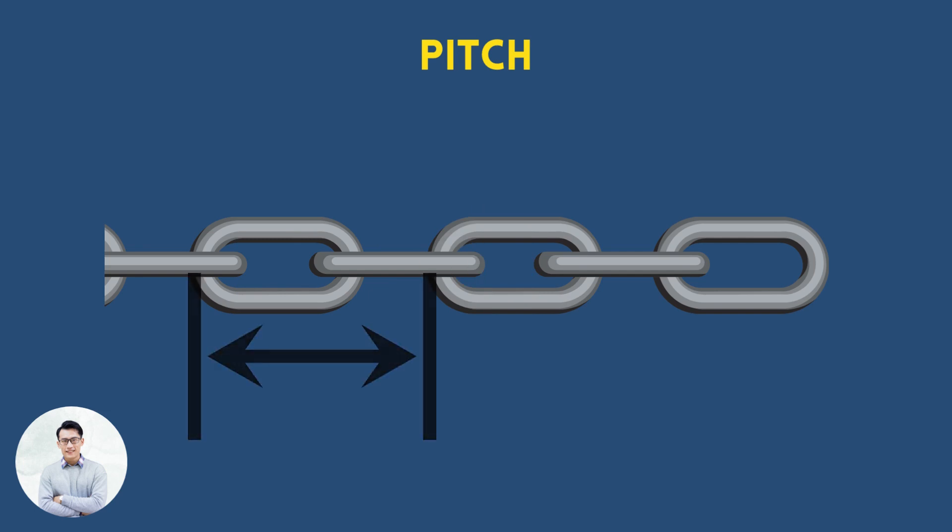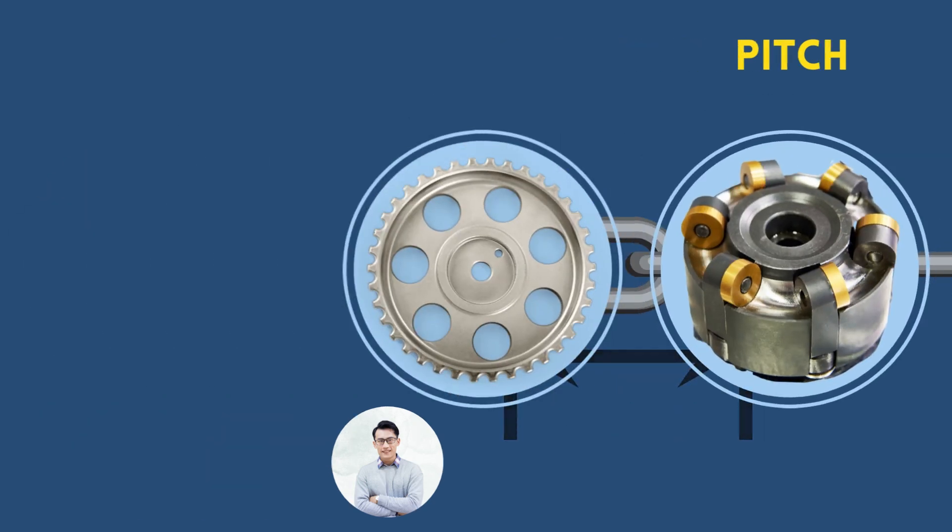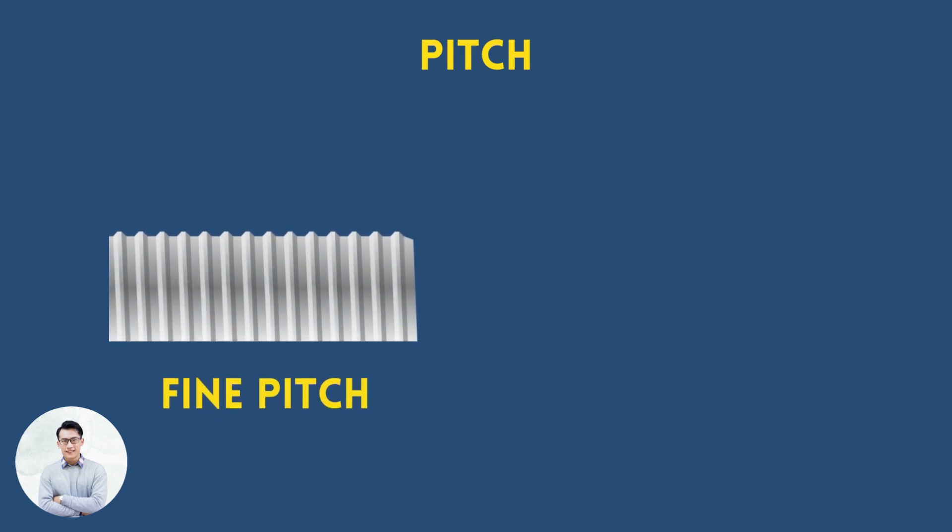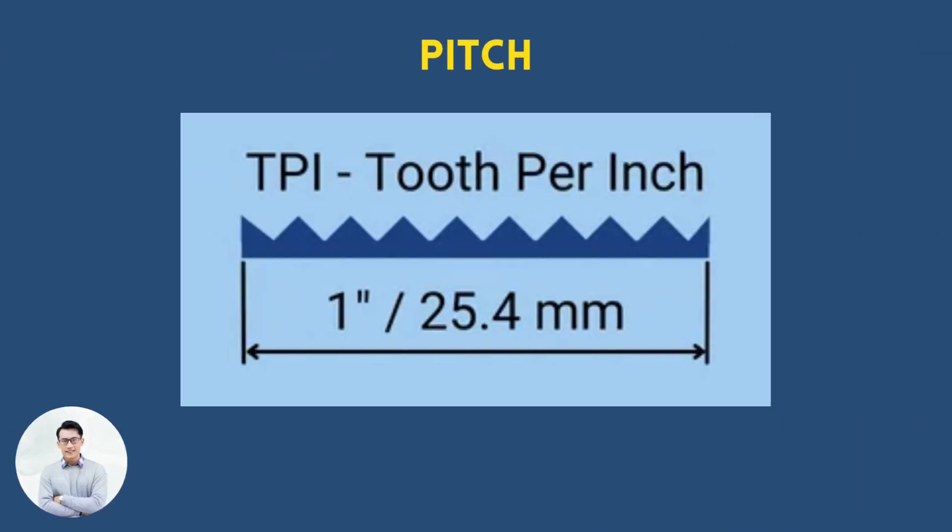A pitch is the axial distance between adjacent repeating features on a mechanical element, such as a gear, a milling cutter, or a thread. A fine pitch screw will have more dense threads compared to a coarse pitch screw. In inch threads, the pitch is often provided in TPI, tooth per inch. In this unit, the pitch is given as the count of threads over a distance of one inch.